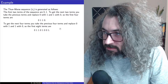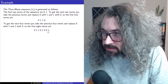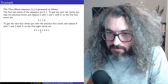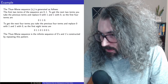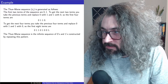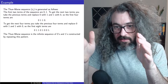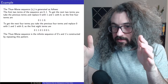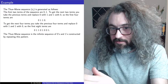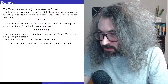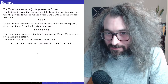To get the next four terms, you take the previous four terms and replace 0 with 1 and 1 with 0. So the first eight terms are 0, 1, 1, 0 — those are the first four — and then the flipped four terms: 1, 0, 0, 1. The Thue-Morse sequence is the infinite sequence of 0s and 1s constructed by repeating this pattern: you take the finite sequence you had before, flip all the bits so 0 becomes 1 and 1 becomes 0, and add the flipped part to the end. The first 32 terms of the Thue-Morse sequence are shown here.